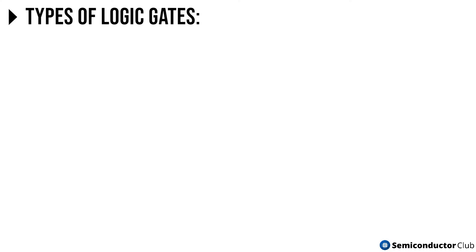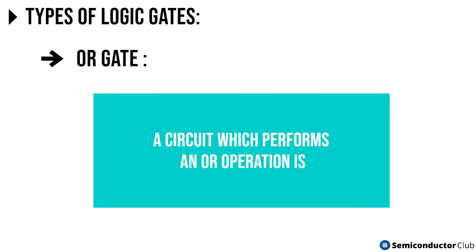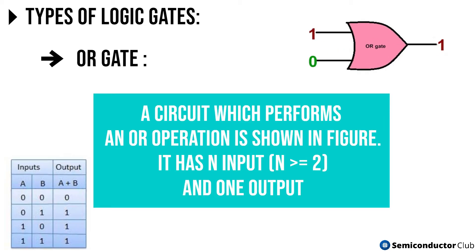Moving on to the next, OR gate. A circuit which performs an OR operation is shown in figure. It has N input, N greater than equals 2, and one output.